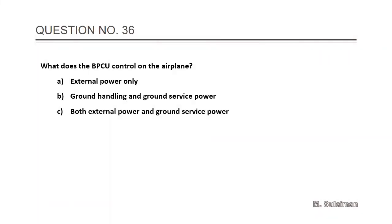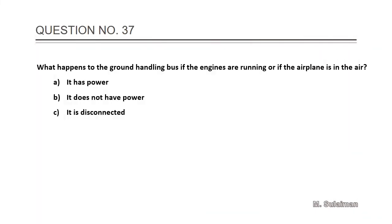Question number 36: What does the BPCU control on the airplane? Answer is C: both external power and ground service power. Question number 37: What happens to the ground handling bus if the engines are running or if the airplane is in the air? Answer is B: it does not have power.